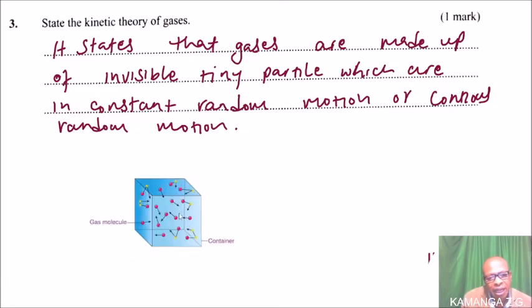These are the gas molecules which are moving, colliding. That is what we are referring to as constant random motion, and that's how you answer that question.